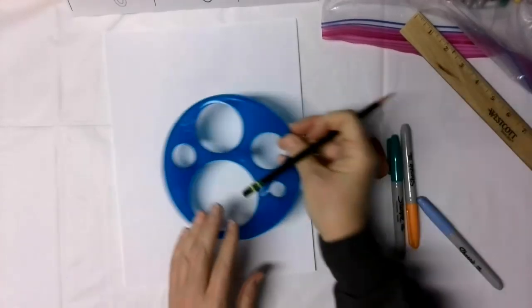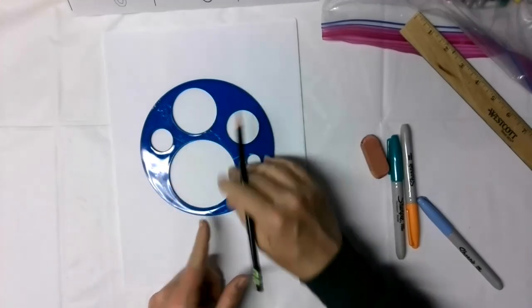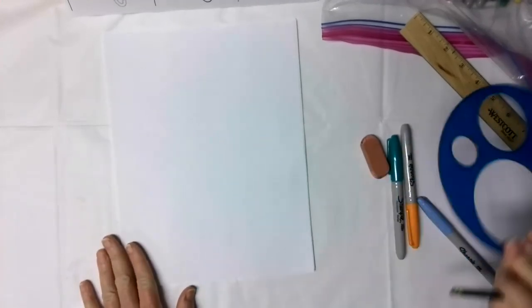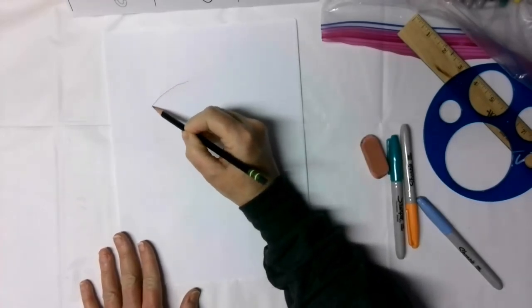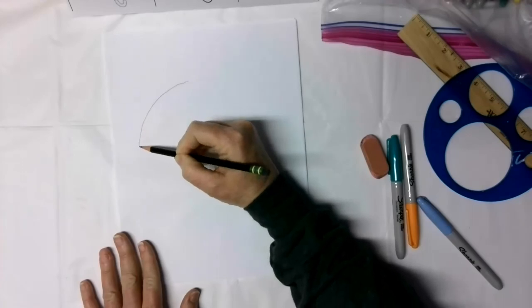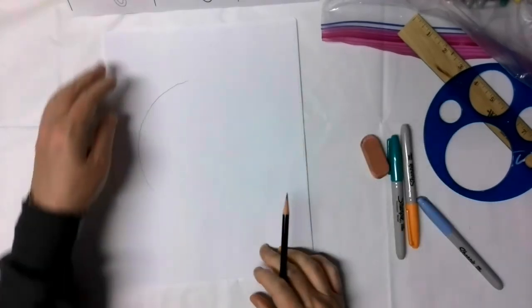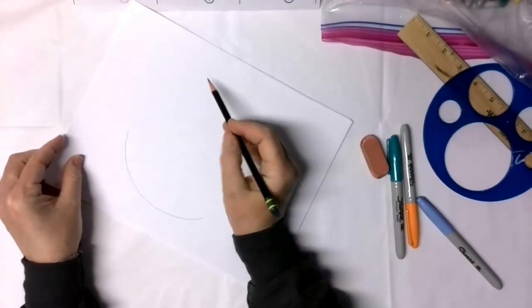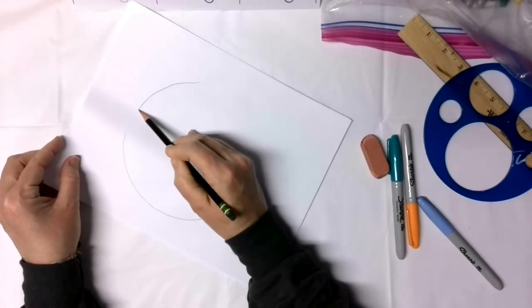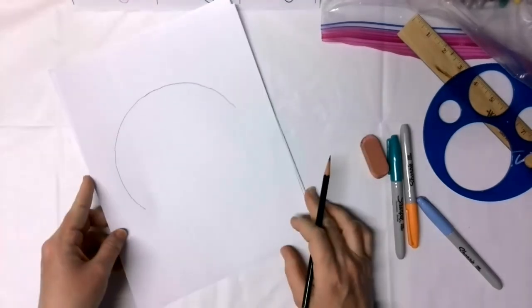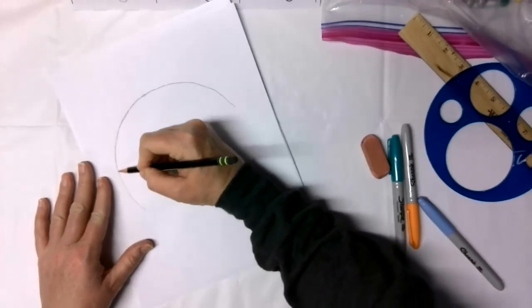Assuming you have something to trace with, we're going to put this up here and then you're going to trace halfway around it. If you don't have something and you trust your hand, you can go ahead and do a half circle. Mine will be just a little bit shaky. And it's easier for me if I turn my paper.